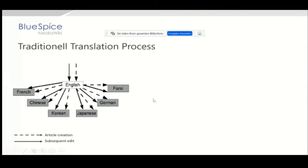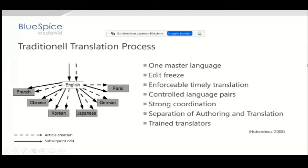In a traditional translation process, you have one master language where you put the content in, finish it, and then it is distributed and processed to the various language versions. The assumptions are: there is one master language, there is an edit freeze — a point in time where the original is not changed anymore — because it's very expensive for traditional processes to work in a loop and process ongoing changes to the original.